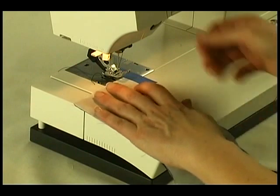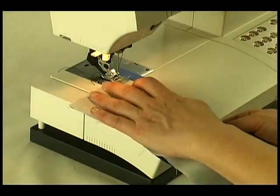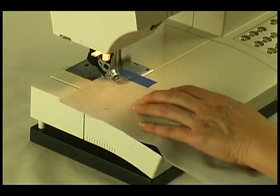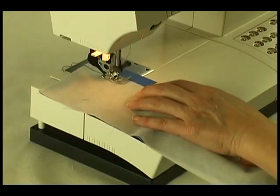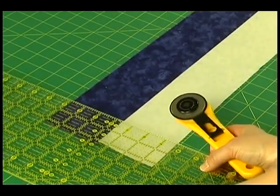Sew the strips right sides together using a one-quarter inch seam allowance. Press the seam toward the darker fabric.